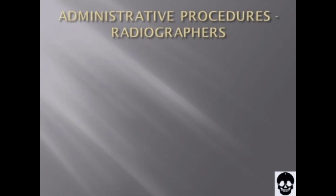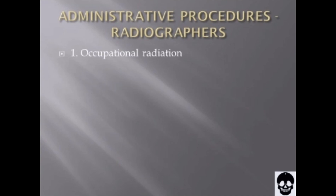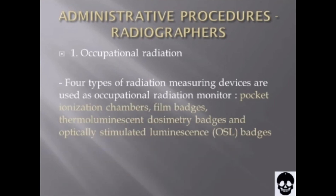Now we turn to administrative procedures for radiographers. Perhaps the single most important aspect of a radiation control program in diagnostic radiology is a properly designed occupational radiation monitoring program. Four types of radiation measurement devices are used for occupational radiation monitoring: pocket ionization chambers, film badges, thermoluminescence dosimetry (TLD) badges, and optically stimulated luminescence (OSL) badges.